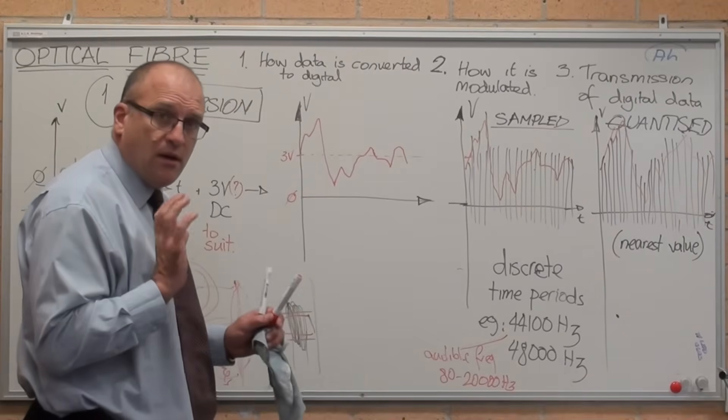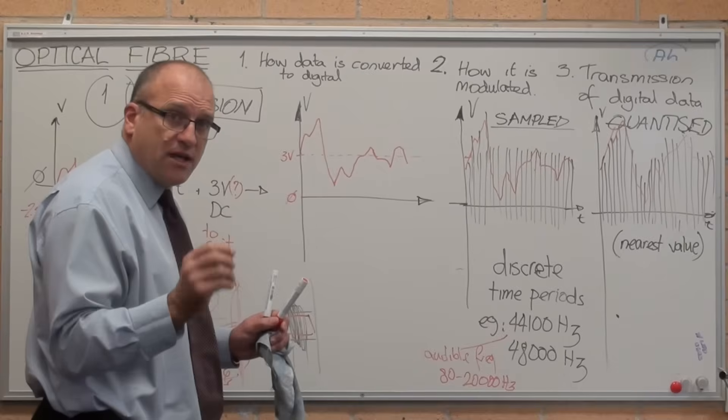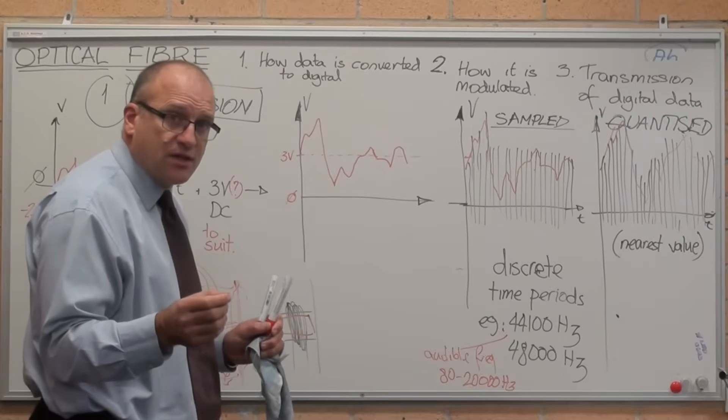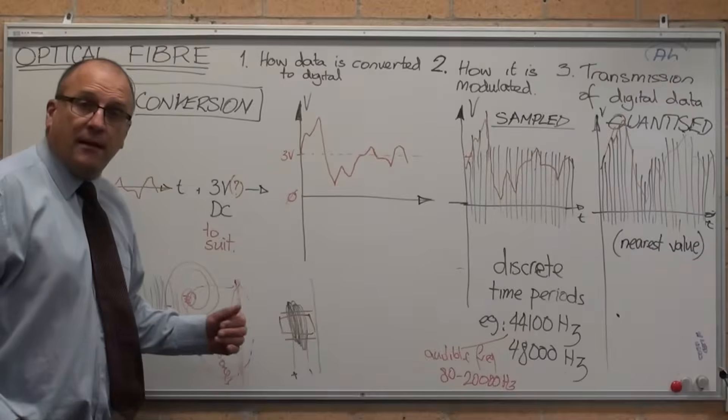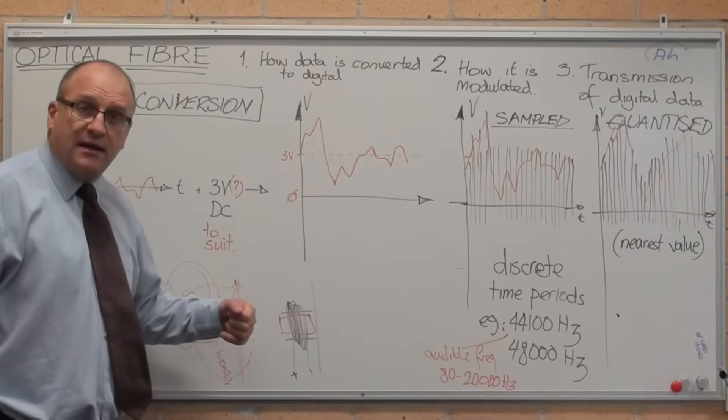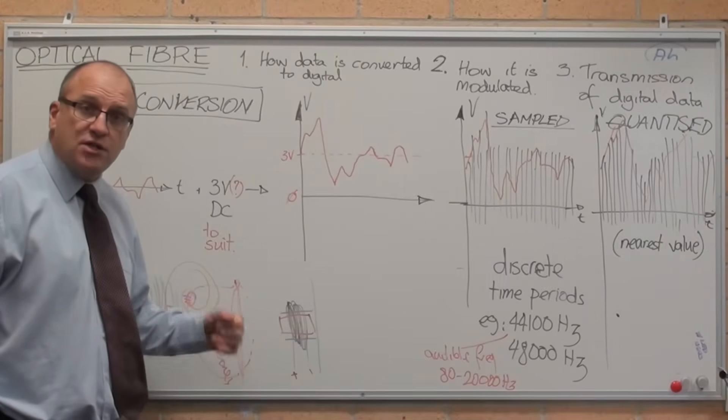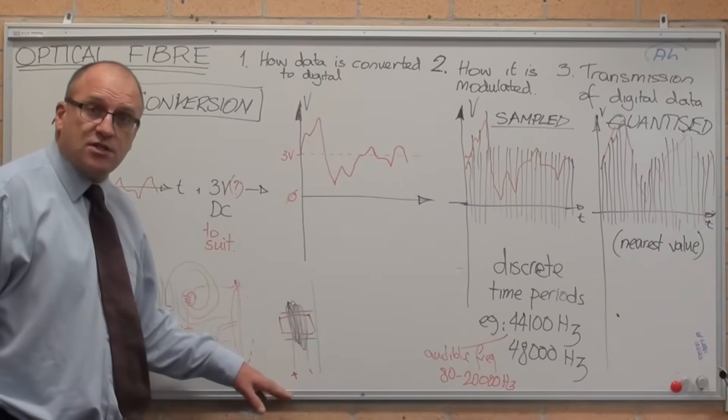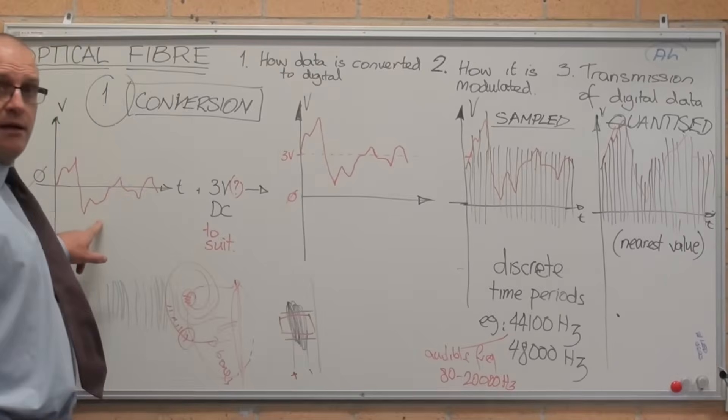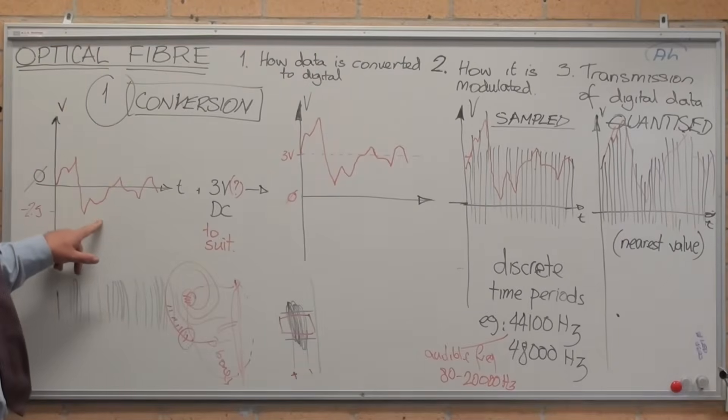As you know, subjecting a wire to a changing magnetic field induces a current inside the wire. That coil moving in and out of the magnetic field generates a voltage. That voltage gets produced into an electrical signal.